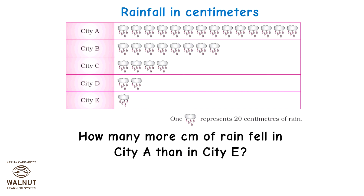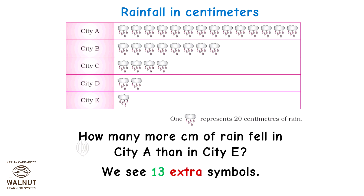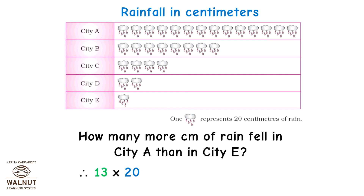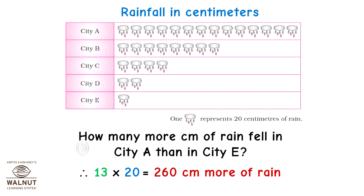How many more centimetres of rain fell in city A than in city E? We see 13 extra symbols, therefore 13 into 20 which is equal to 260 centimetres more rain in city A than in city E.